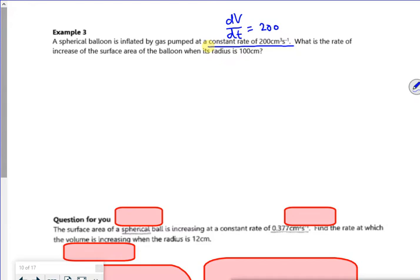Now it wants to know the rate of increase in the surface area, so it wants to find dA/dt. Well, it's got a radius of 100.